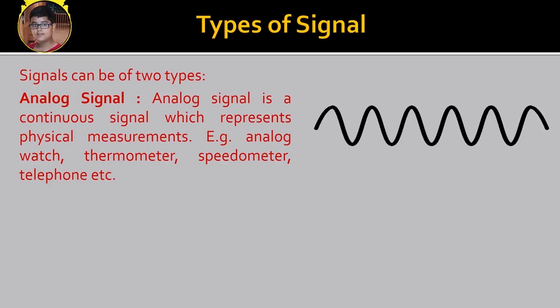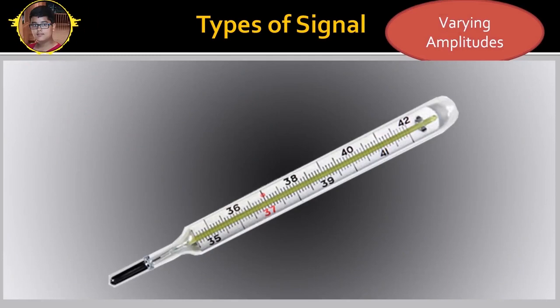Some examples are Thermometer, Speedometer, Telephone and many more. In this, as you can see, the two values given are 35 and 36. So the Mercury gradually moves from 35 to 36 taking all the infinite values between them, even if it is 35.20005230069. The Mercury will go through this value also.